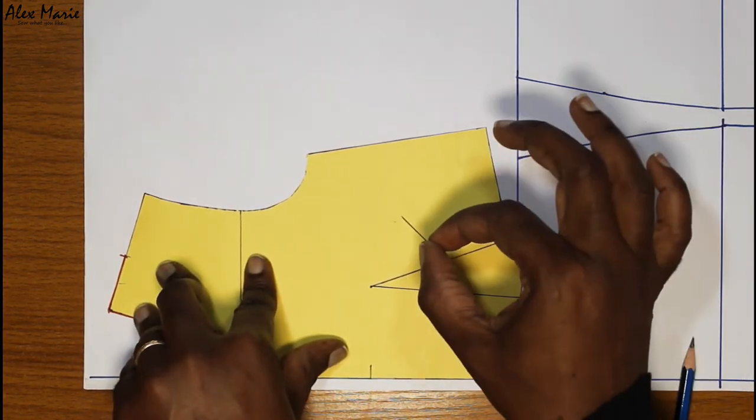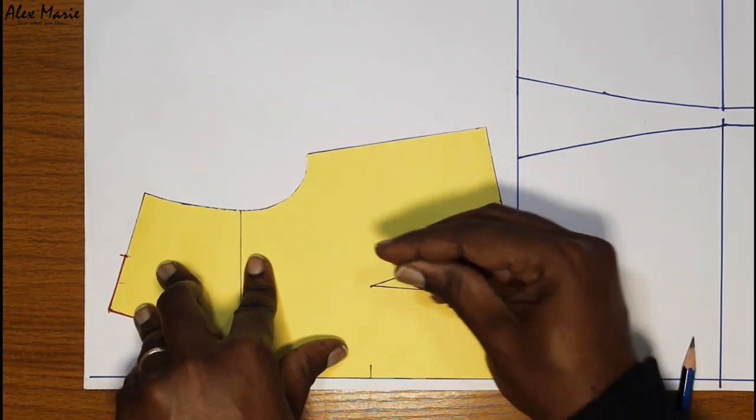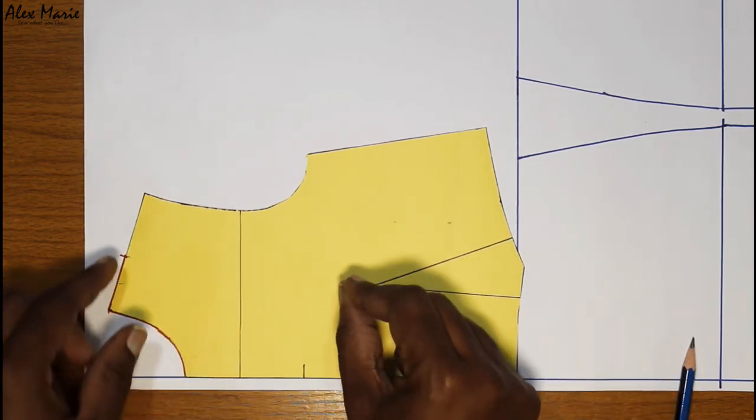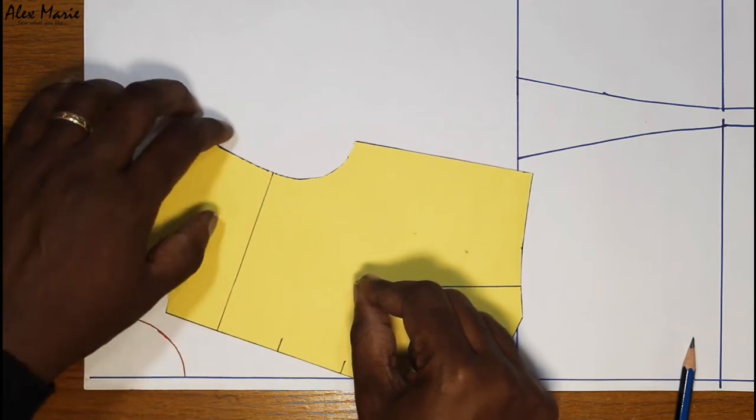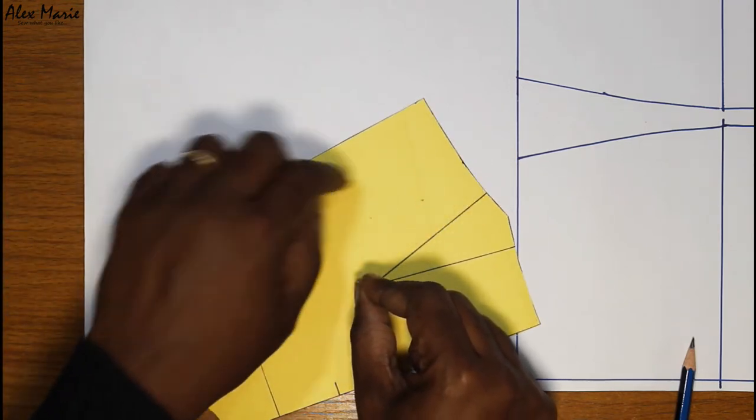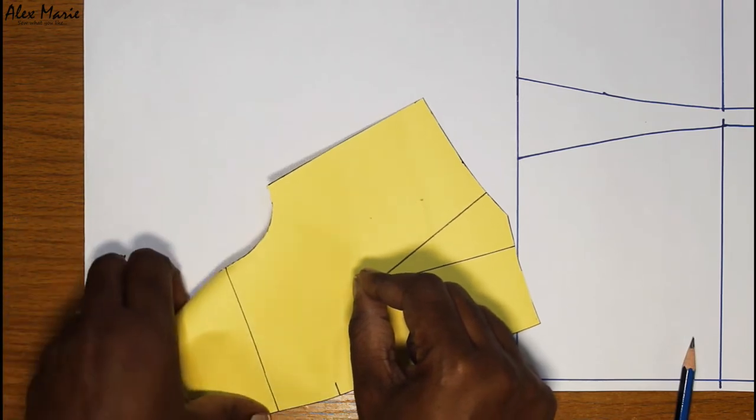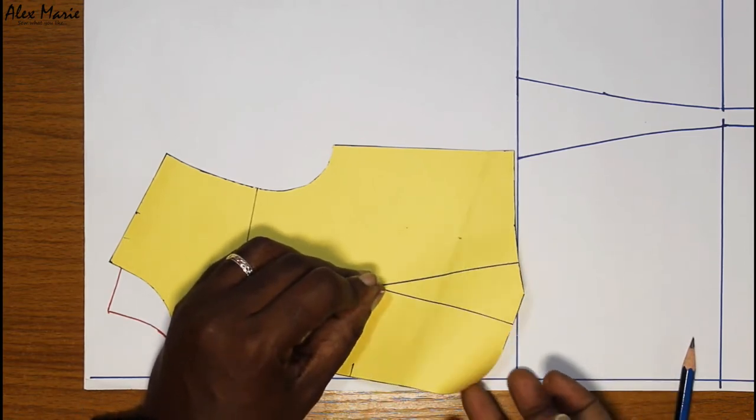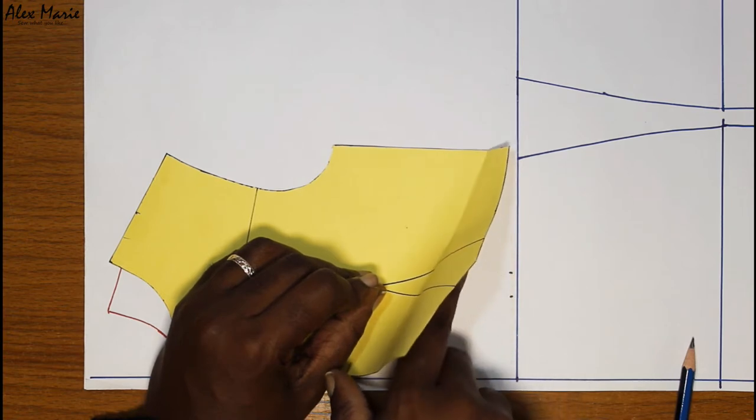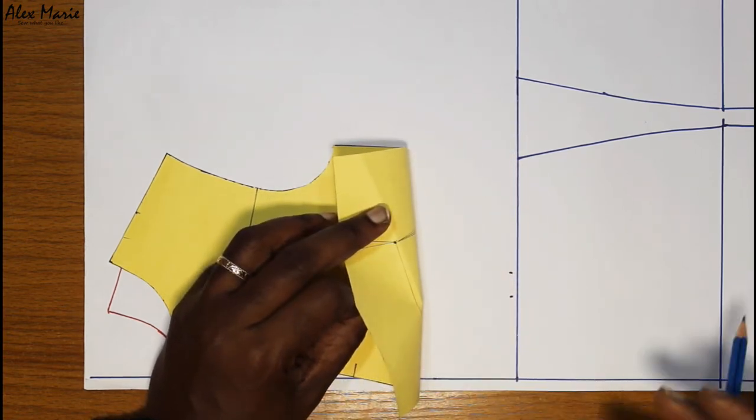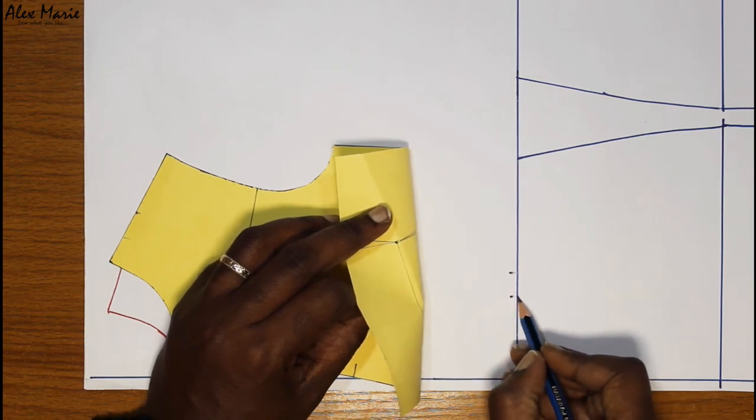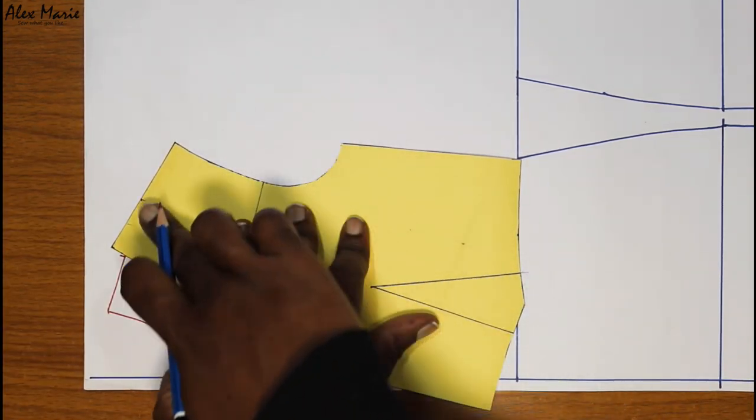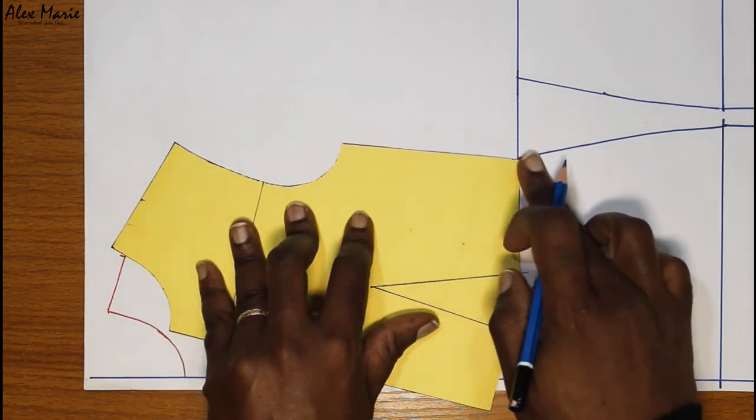And we're going to take a pin and put it right at the middle here. And now we can turn this around as you can see. I'm going to take this dart leg, turn this around until you get to the dart leg. And when I stop, I'm going to continue tracing from the shoulder around and down to the waist.